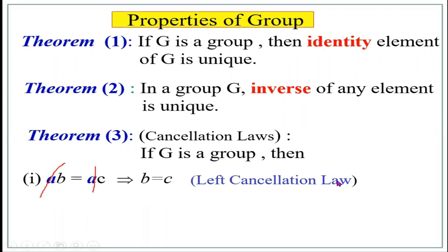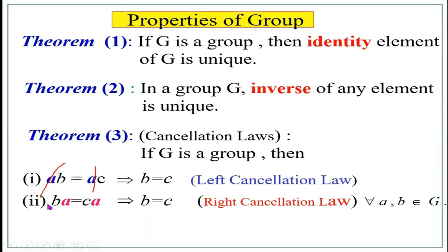Similarly, we have the right cancellation law: BA equals CA implies B equals C. Here we cancel A, which is on the right of elements B and C. Note that the operation between A and B is not explicitly mentioned — it may be addition, subtraction, division, or any binary operation. If the operation is multiplication, we must impose the condition that A is not equal to zero.